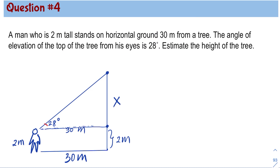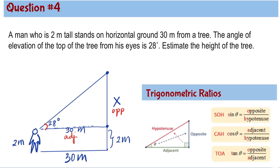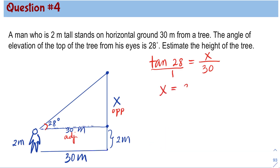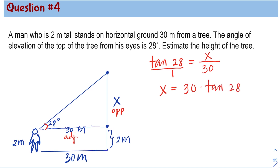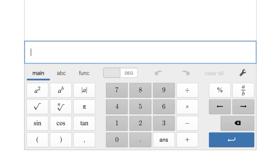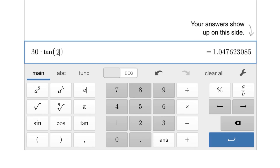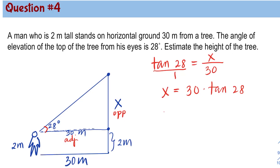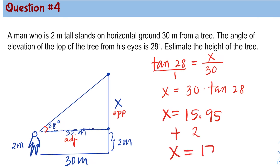In reference to the 28 degree angle, 30 is the adjacent and X is the opposite. The trigonometric ratio that involves opposite and adjacent is tangent. Setting up the equation, tangent 28 degrees is equal to opposite X divided by adjacent 30 meters. Cross multiplying, X is equal to 30 times tangent 28 degrees. Using our calculator, the value of X is 15.95 meters, and then we add the height of the person which is 2 meters. So the height of the tree is 17.95 meters.